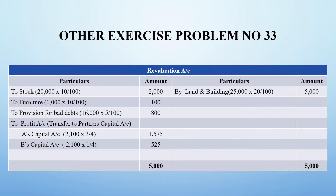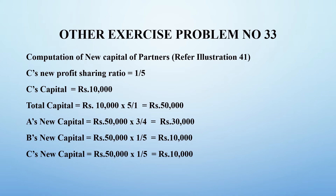Now we post the journal entries to the ledger. In the revaluation account, if an asset value decreases it goes to the debit side - so stock, furniture, and provision go on the debit side. Land and building value has increased so it goes on the credit side. Totalling both sides gives a balancing figure of 2,100 rupees, which is split between A and B in their old profit sharing ratio and posted to capital accounts. C's new profit sharing ratio is 1/5 and C's capital is 10,000 rupees.